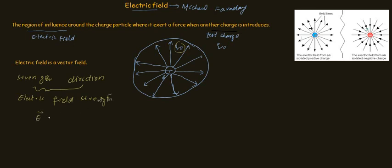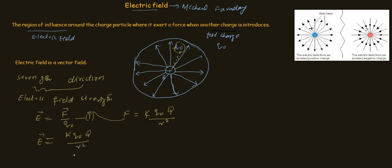Electric field strength is represented by E and is equal to force per unit charge — this is equation number one. Using Coulomb's law, F = k·Q naught·q / r², where r is the distance between the source charge and the unit charge, and substituting into the equation, we get E = k·Q naught·q / r² divided by Q naught. Q naught cancels out.